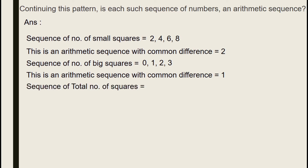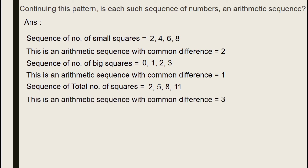The sequence of the total number of squares is 2, 5, 8, 11. Let's find the difference: 5 minus 2 is 3, 8 minus 5 is 3, 11 minus 8 is 3. So it's an arithmetic sequence with common difference 3. Thank you.